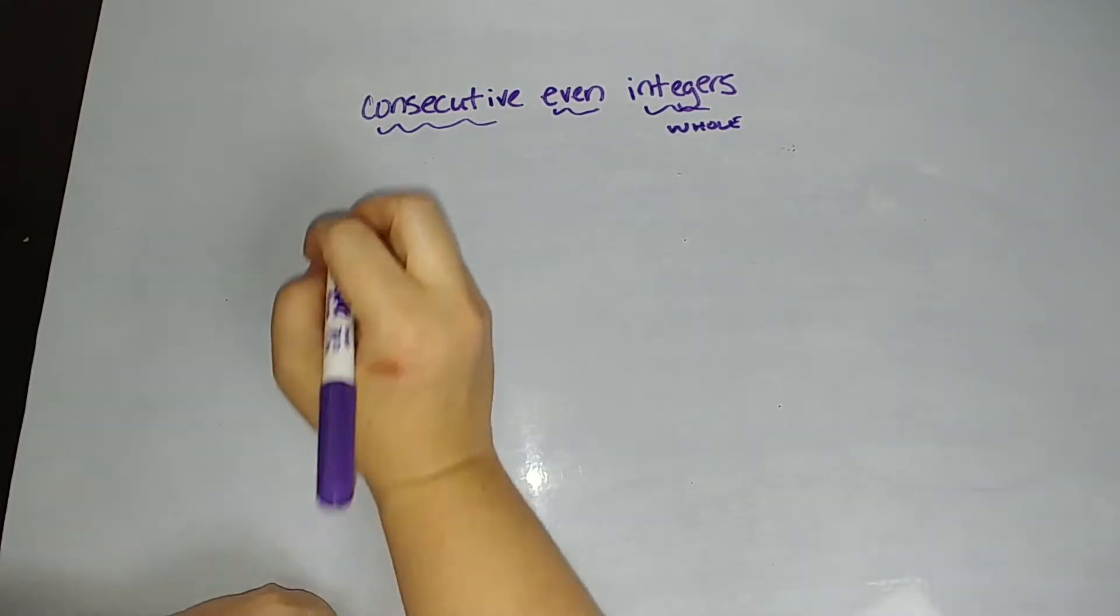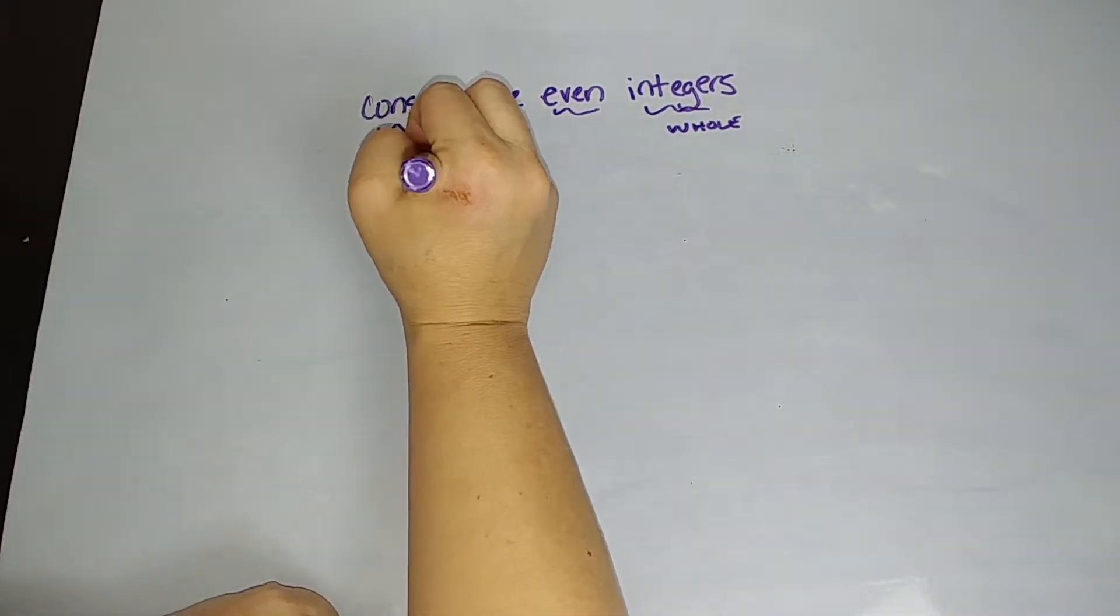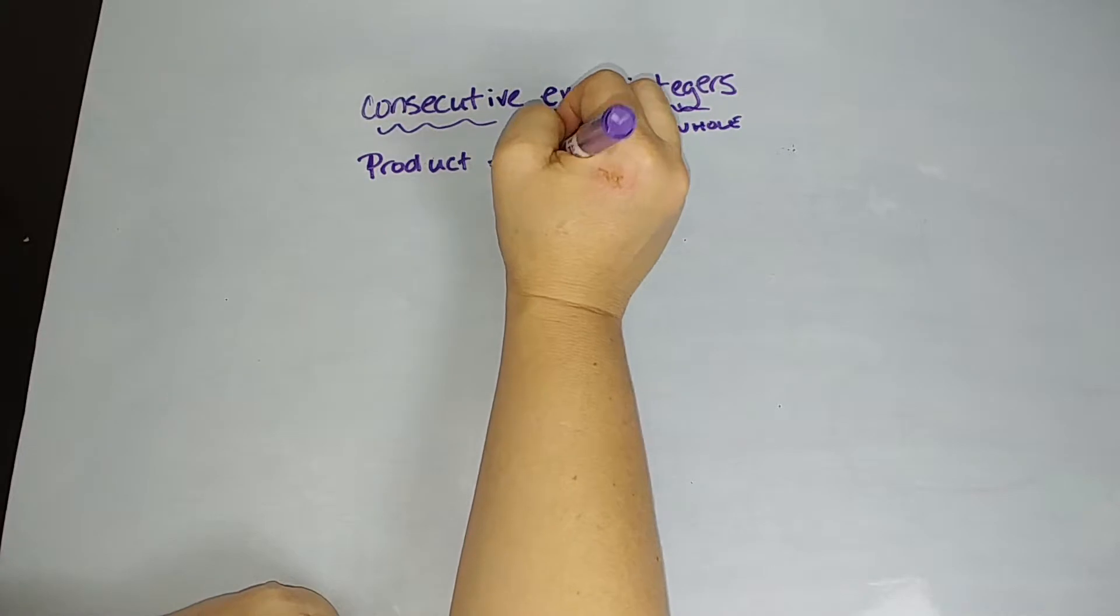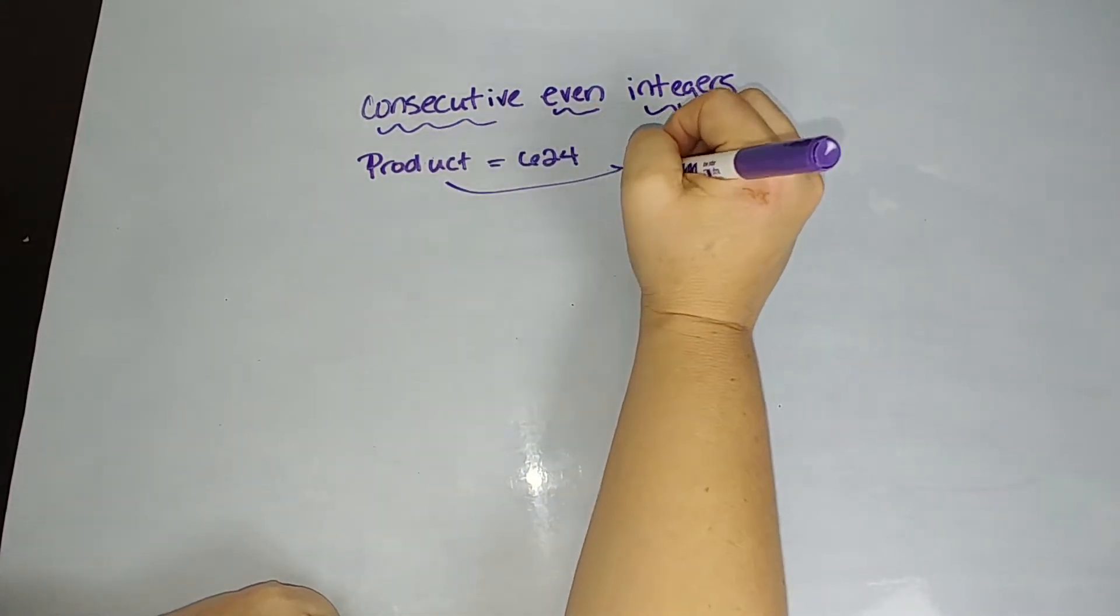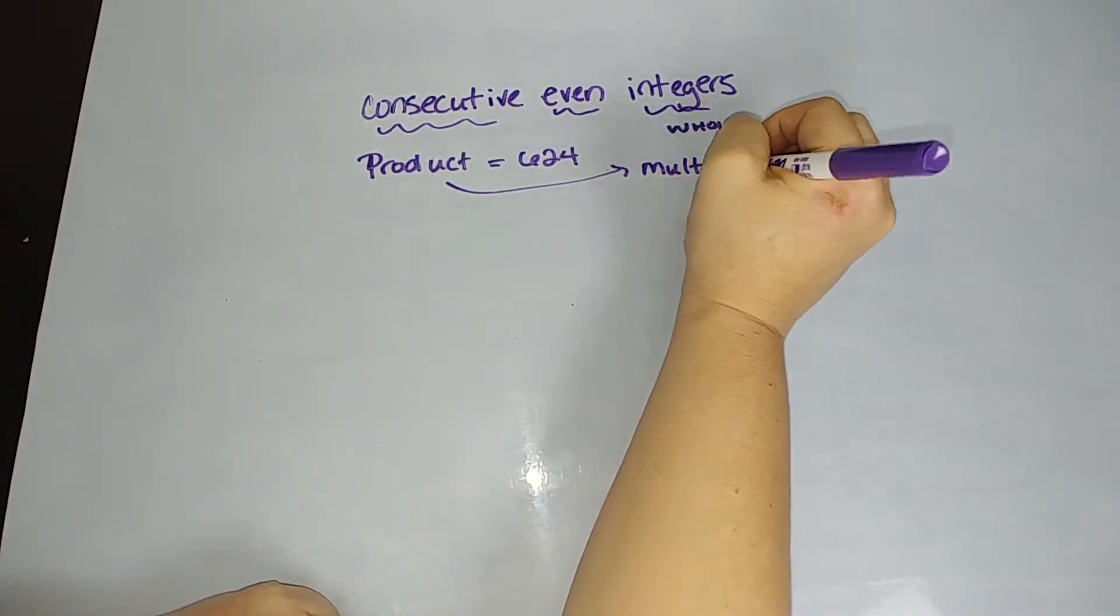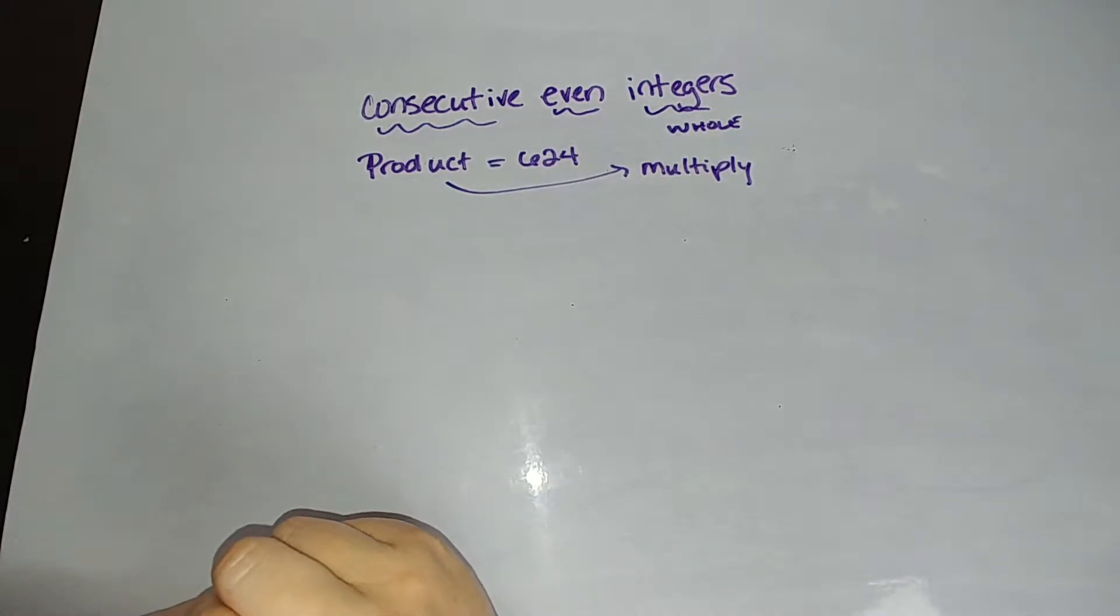Okay, and so we now need, we know that their product has to equal 624. Product means multiply. Okay, every single time you see something that says consecutive even, consecutive odd, the only thing you can do is you've got to start out by letting your first number be something.